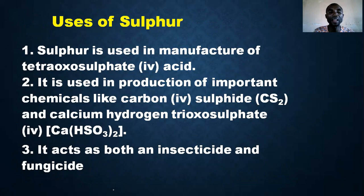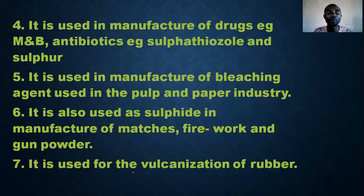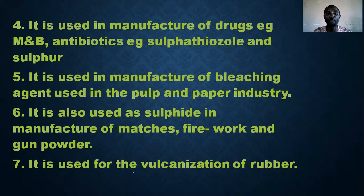The uses of sulfur: it is used in manufacturing of tetraoxosulfuric acid (H₂SO₄); in production of important chemicals like carbon disulfide and copper tetraoxosulfate; it can act as both an insecticide and a germicide; it is used in manufacturing drugs such as M&B, which is an antibiotic; and in manufacturing bleaching agents used in paper production.